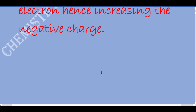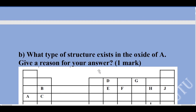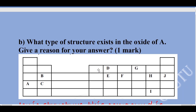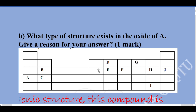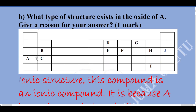What type of structure exists in the oxide of A? Give a reason for your answer. A is an alkali metal — it is in group one. A forms a stable ion by losing electrons. Two atoms of A would be required to react with oxygen to form an oxide. So it is an ionic structure — this compound is an ionic compound.